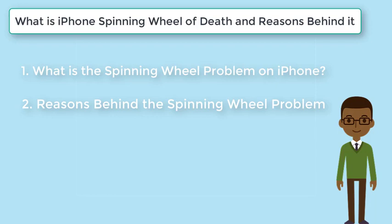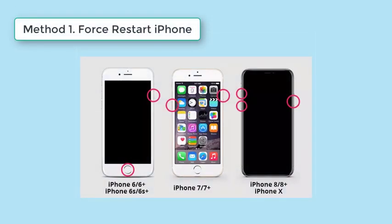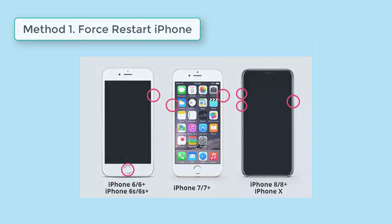The spinning wheel of death may appear to be a complex issue requiring advanced technological know-how. However, fixing this is very easy and may only take a few minutes. Force restart is the easiest technique to solve the iPhone black screen spinning wheel issue. Apple has long asked its clients to use this method to solve less complex software glitches, especially in iPhones. There is always a good chance that a force restart will fix this problem and automatically fix iOS bugs. Always make sure that the iPhone is charged to a reasonable capacity before initiating a force restart.